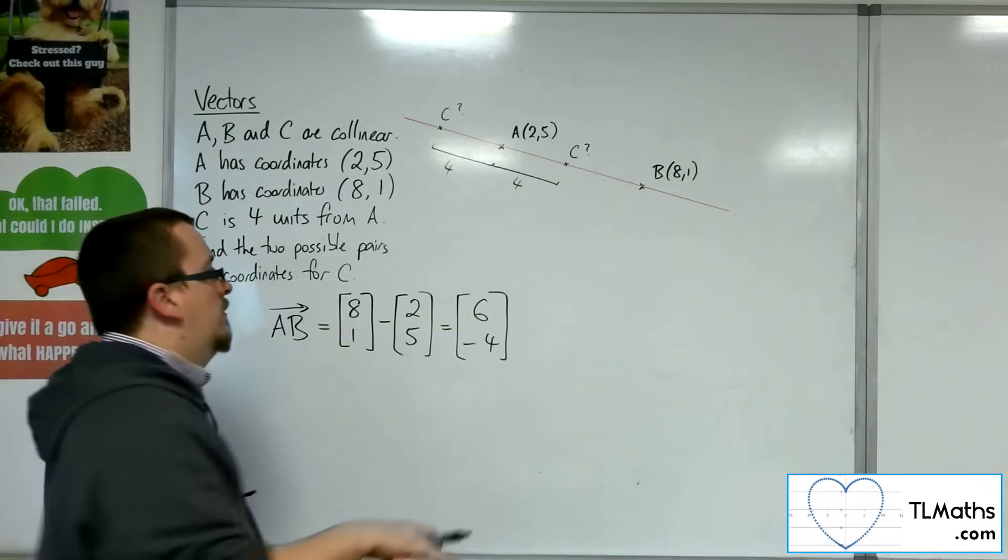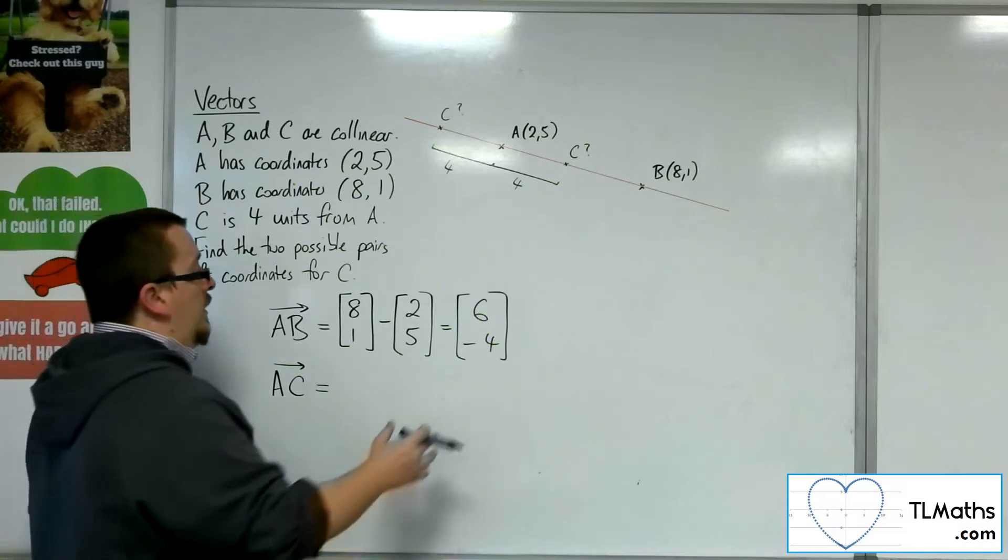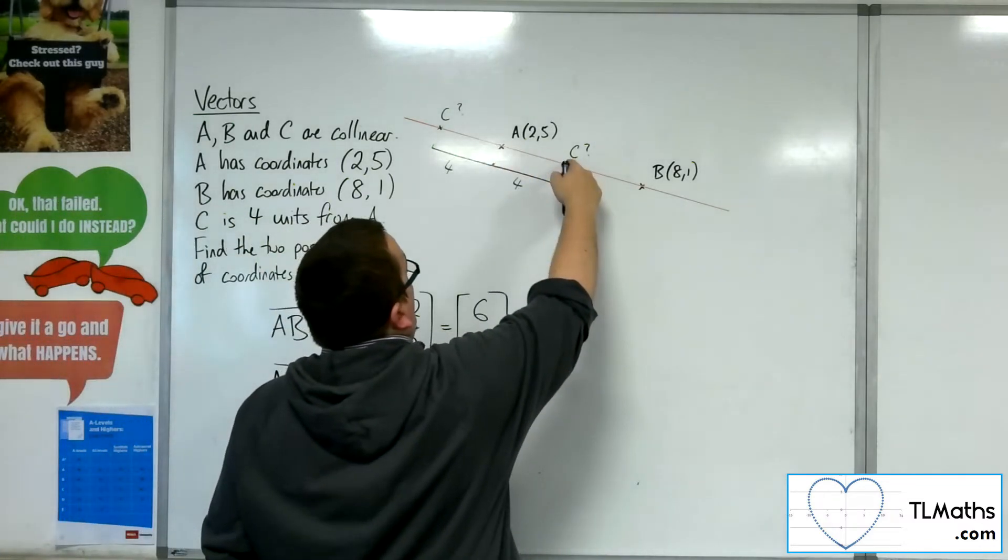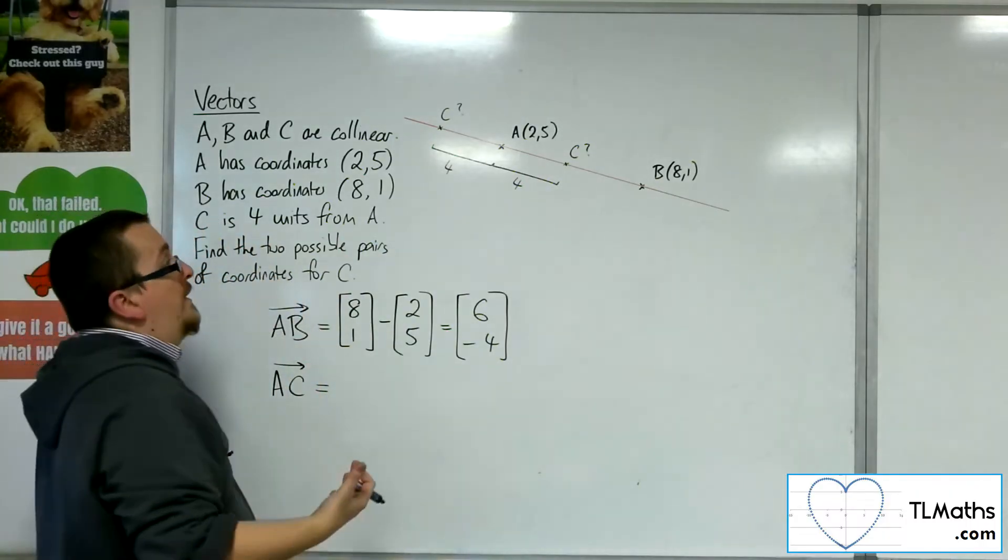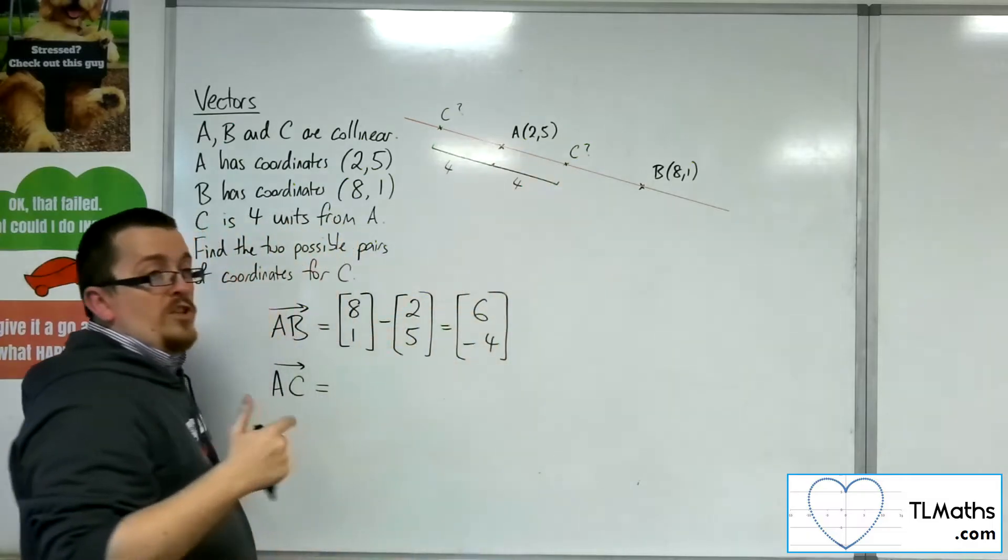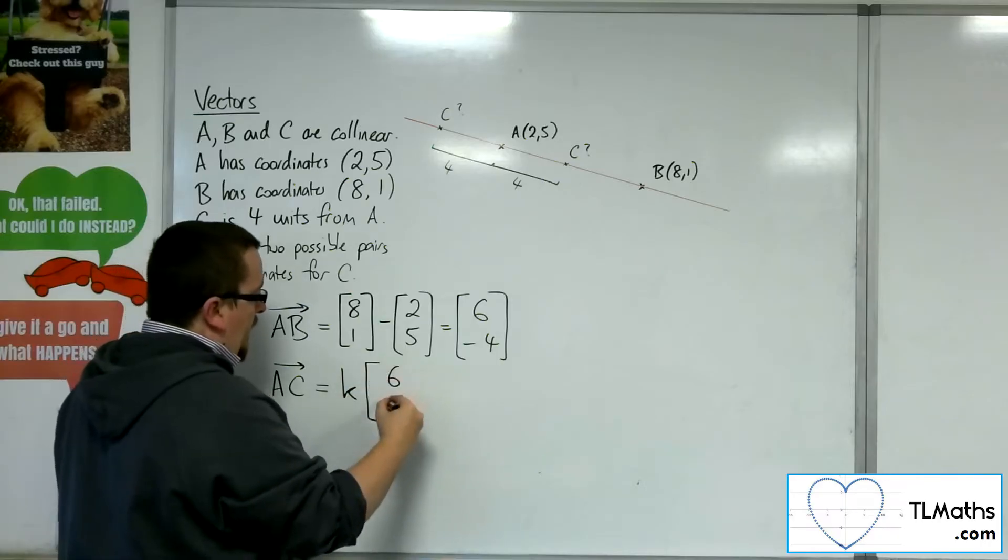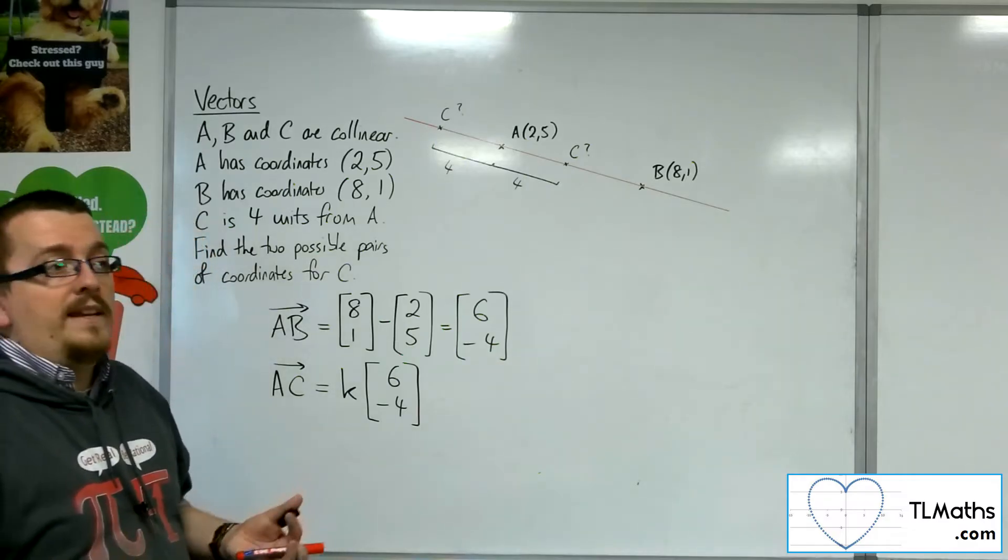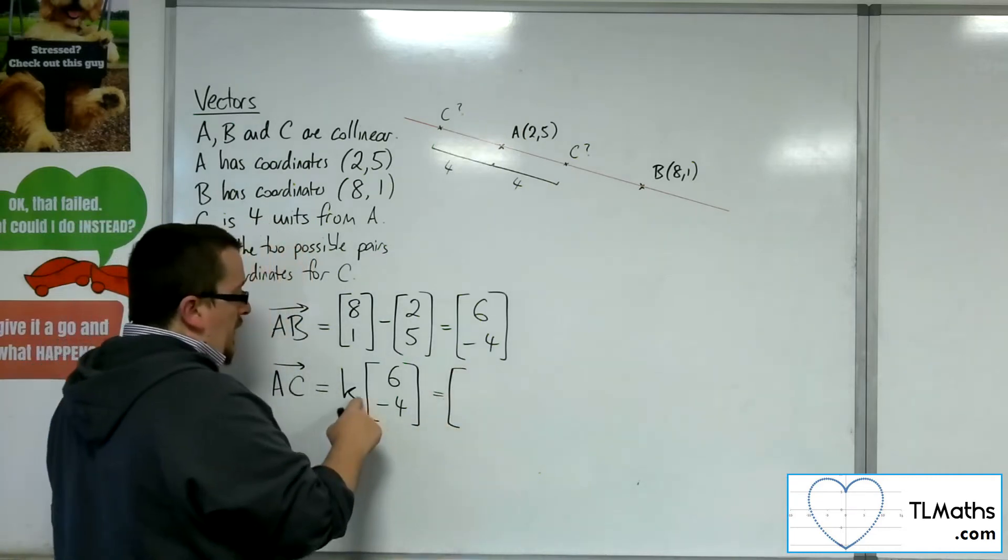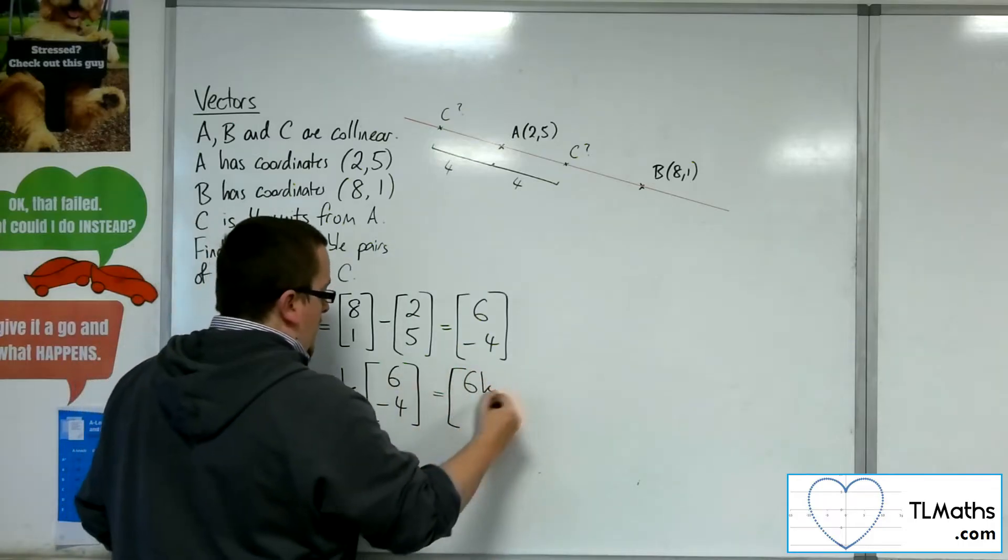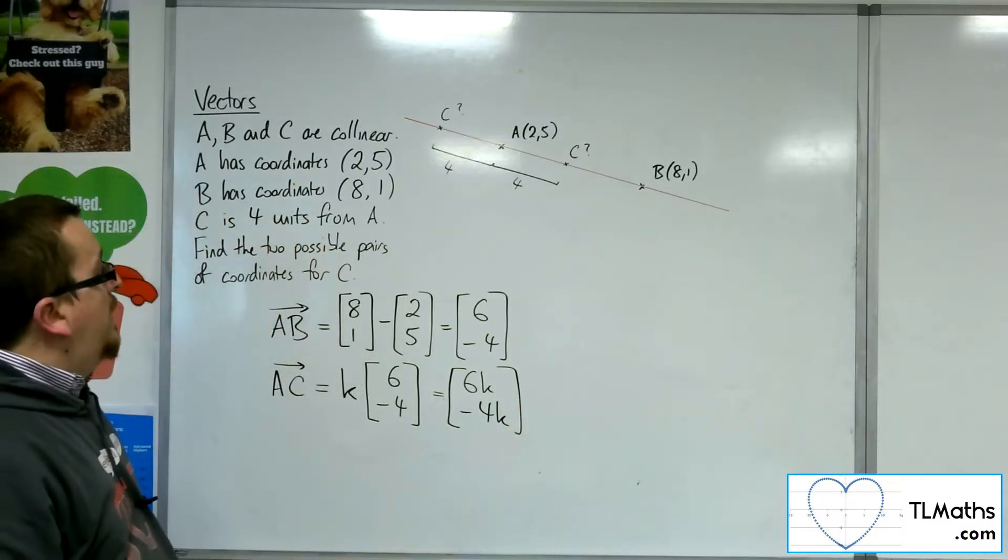So the vector A to C must be some multiple of A, B, because it must be going in the same direction to get to C. It could be going that way, in which case the multiplier would be negative. However, it will still be parallel no matter which direction it's going. So A, C is K lots of 6 minus 4. And the K is what I really need to find here. I should be able to find two values of K. So because it's a scalar quantity, I can multiply the 6 by K and the minus 4 by K.